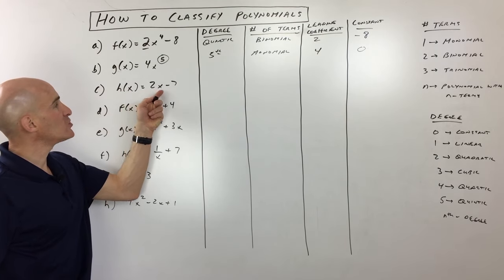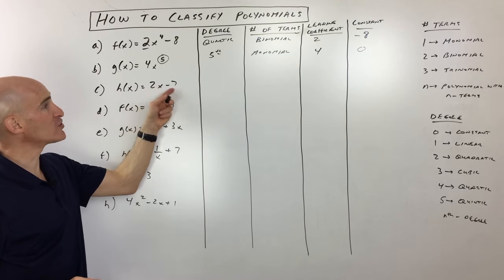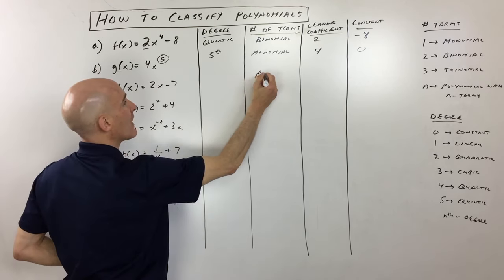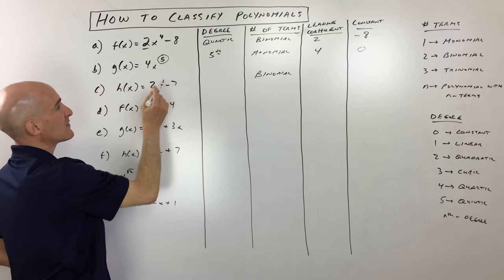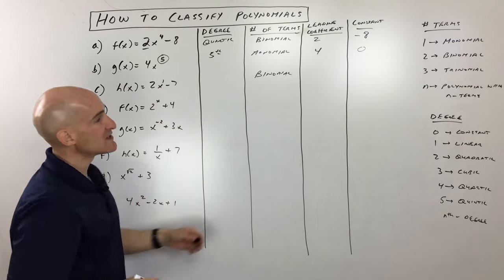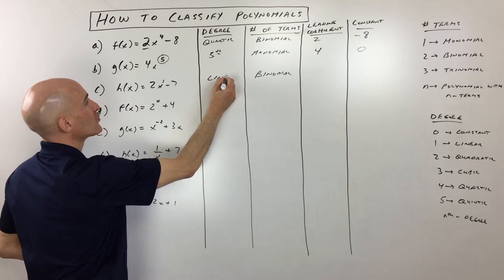So h(x) equals 2x minus 7. This one, you can see that it's a binomial. There's two terms. So let's just write that down, binomial. And it looks like it's a first degree. See how that's x to the first, which means that it's called first degree or linear, like a line. I'll just write linear for the degree.